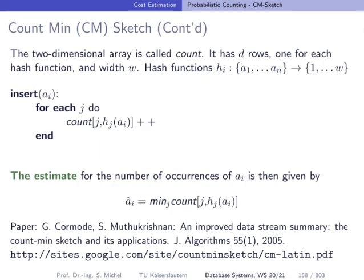So here's a more formal description of how the Count Min sketch works. We have a two-dimensional array that we call count. We have d rows, one for each hash function, and the width of w. This is like the range onto which the hash functions map. For an input value ai, we iterate over all the hash functions hj, we apply hj on this ai value, and we set the entry of our 2D array with the coordinates, the positions j and hj(ai) plus 1.